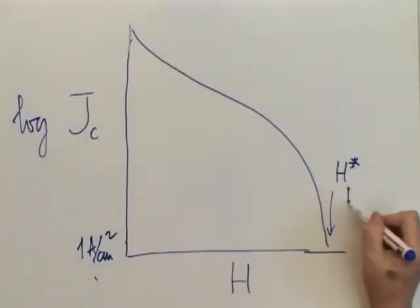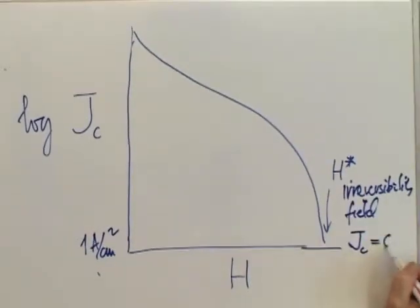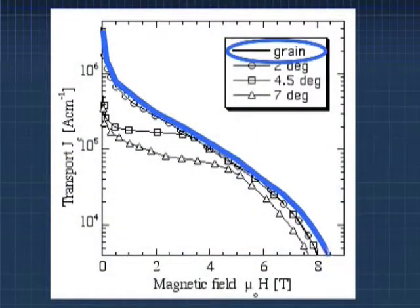We can define what is called an irreversibility field, which corresponds to the bulk critical current density going to zero. This would be the properties of the grain.